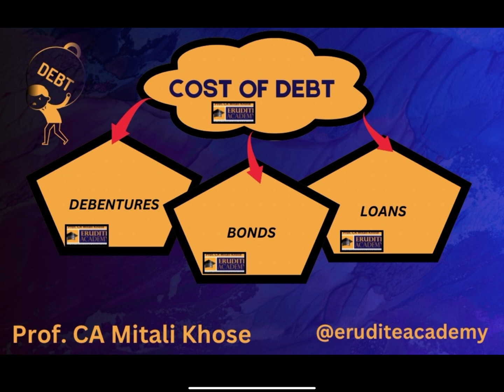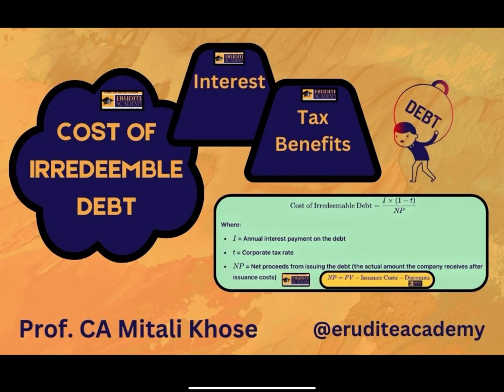Debt can be either redeemable or irredeemable in nature. In redeemable debt, the principal amount is repaid at the time of maturity along with interest. However, in case of irredeemable debt, only interest will be paid every year. There won't be any repayment of principal amount. Let's first try to understand the cost of irredeemable debt.